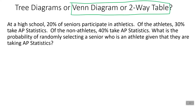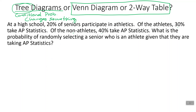Tree diagrams are different from Venn diagrams and two-way tables. You must use a tree diagram when the conditional probability changes something. For example, at a high school 20% of seniors participate in athletics; of the athletes, 30% take AP Statistics; of the non-athletes, 40% take AP Statistics. Since the probability of taking AP Stat depends on whether you're an athlete, this requires a tree diagram.